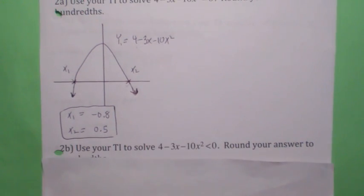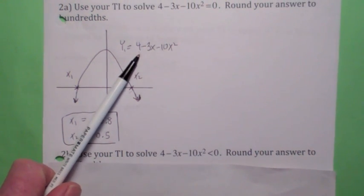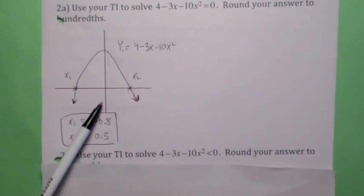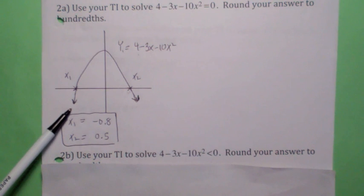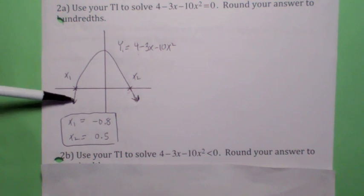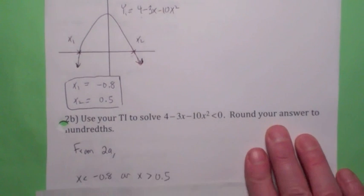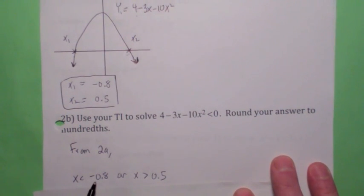Now look at this. Look at part b. Suppose we want to solve this inequality. This is precisely the same function as we have here in part a. I want to know, when is y1 less than zero? Another way of saying that is, when is the graph of y1 below the x-axis? I want to know all the x values for which the graph of y1 is below the x-axis. And you can tell the graph is below the x-axis over here. That would be when x is less than 0.5, right? Less than negative 0.8.